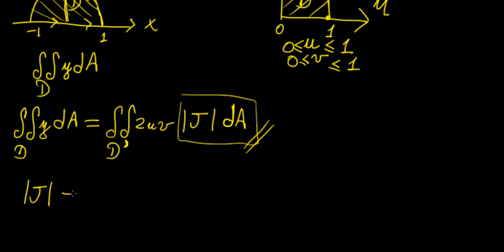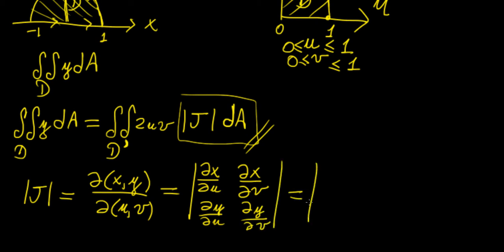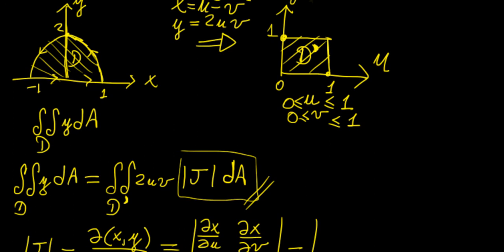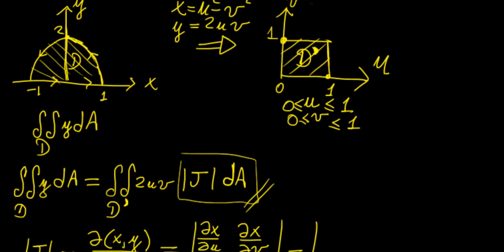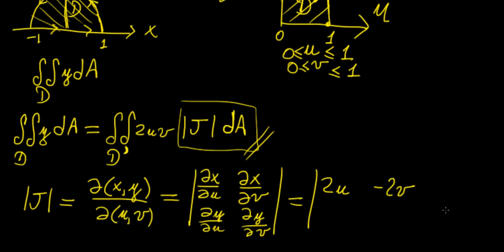We need to define the Jacobian. The Jacobian determinant is expressed as the partial derivatives of x and y with respect to u and v — that's ∂x/∂u, ∂x/∂v, ∂y/∂u, ∂y/∂v. From the transformation x = u² - v², the partial with respect to u is 2u and with respect to v is -2v. For y = 2uv, the partial with respect to u is 2v and with respect to v is 2u.